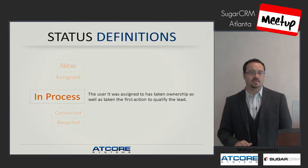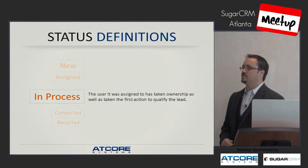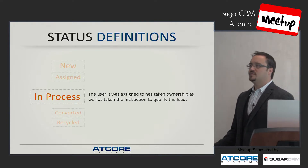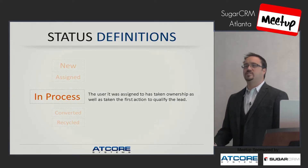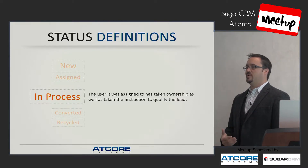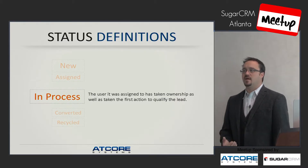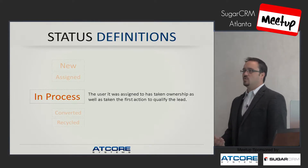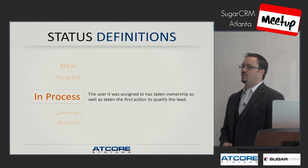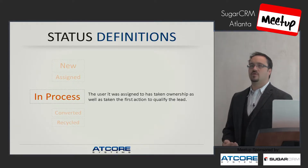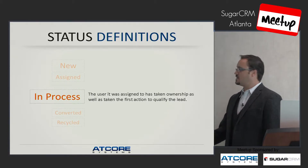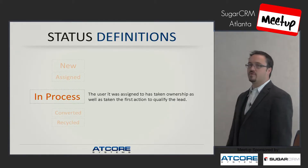One example of a custom status we added at AtCore Systems is 'engaged.' In process means we're reaching out to a lead — maybe they initially contacted us, maybe we're prospecting. We added 'engaged' so we know we're having a bidirectional communication with that person. If we're having bidirectional communication, they're a lot further along in the lead or sales funnel than if they were in process, new, or assigned.